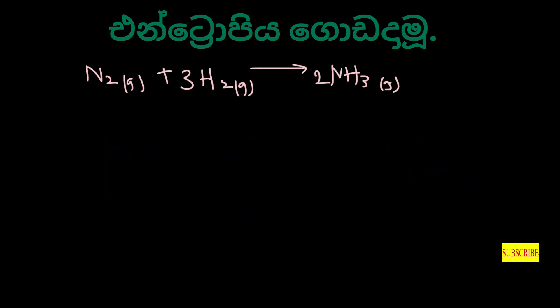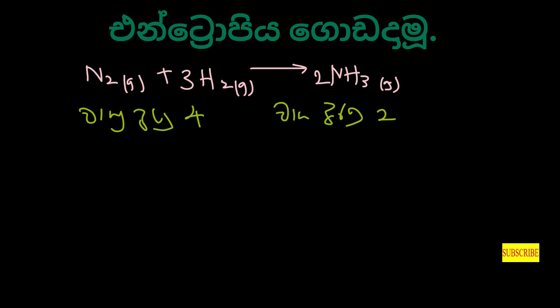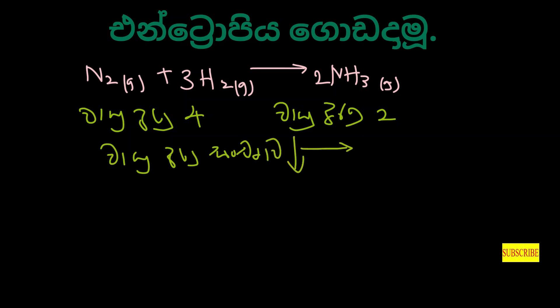Now we have to do this with nitrogen, hydrogen, ammonia. When we see the vayu, we're going to see the vayu. We've got vayu, which is the vayu, which is the dosage of vayu.